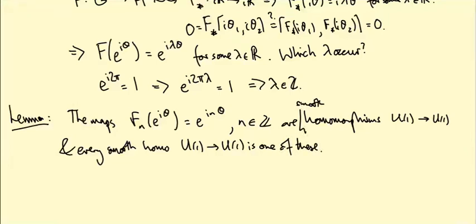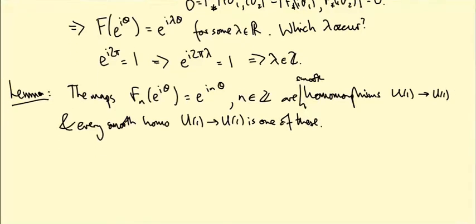So the integers come in here because the group U(1), being a circle, has some interesting topology. Here's a picture of the group U(1). It's the unit circle in the complex plane.